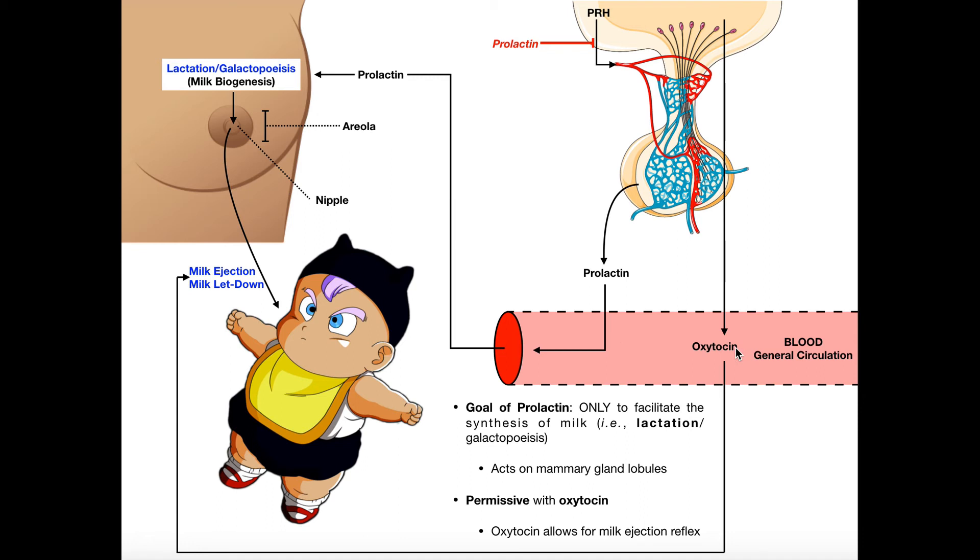Now, we're going to have a separate video where we talk about oxytocin. Oxytocin is a hormone that is made in the hypothalamus, and then it's sent to the posterior pituitary gland. So this is actually not an anterior pituitary hormone. This is one of our two major posterior pituitary hormones. But in any case, oxytocin will be released, and it will come over here, and it will trigger the milk ejection reflex. And then the baby will be able to receive that milk.